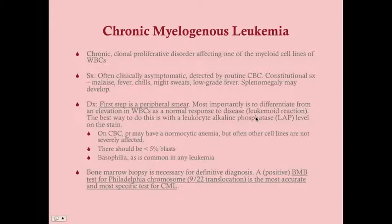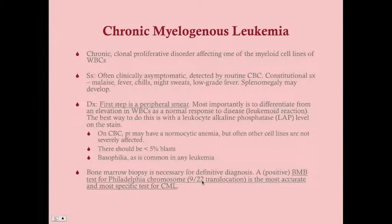To diagnose CML, a white blood cell count above 150,000, a peripheral smear showing immature cells, and a low LAP score are all suggestive. However, the most specific and accurate test is a bone marrow biopsy, which allows definitive diagnosis by looking for the Philadelphia chromosome — the 9-to-22 translocation. This is present in 95% of CML patients; the other 5% don't need to be considered for the USMLE.